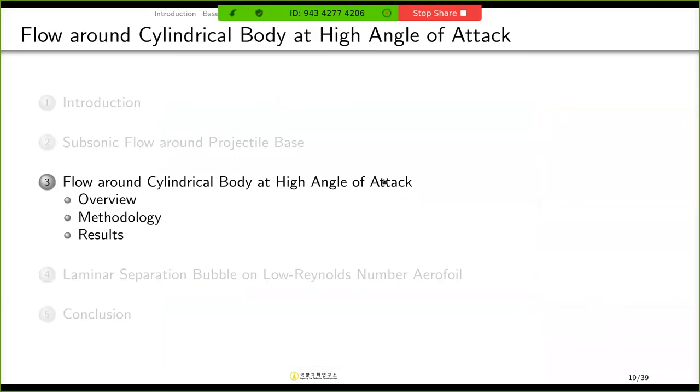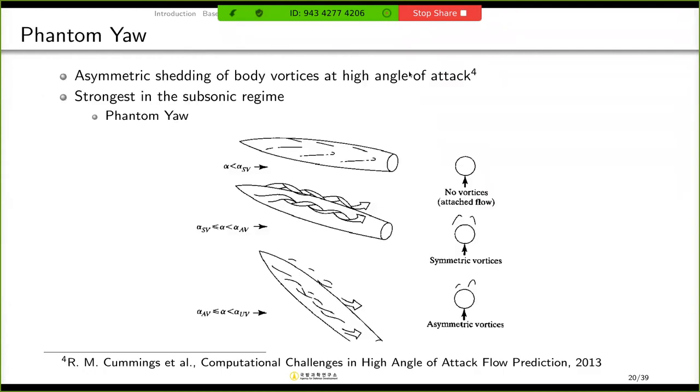Now I will show another simulation result. This is the flow around the cylindrical body at high angle of attack. This figure shows some schematic flow structure of body vortex. If the angle of attack is very low, all flow is attached and there is no body vortex. But if the angle of attack is bigger than some value, we can see some symmetric vortex.